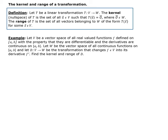In this lesson, I'm going to talk about the kernel and range of a transformation. Let T be a linear transformation from the vector space V to the vector space W. The kernel is basically the null space — they use the word kernel whenever we deal with a linear transformation. The kernel is the collection of all vectors in V that get mapped to the zero vector, which lies in the vector space W.